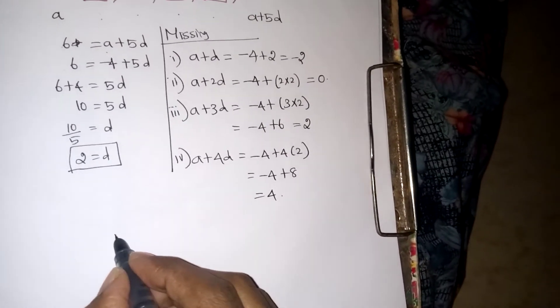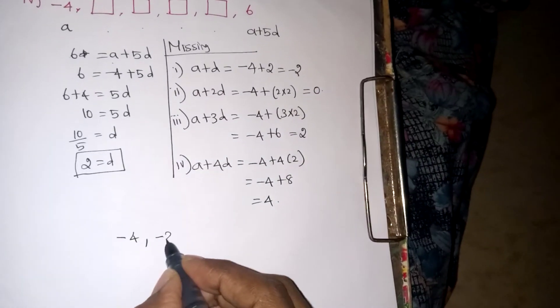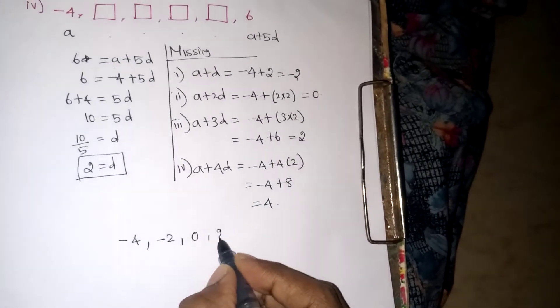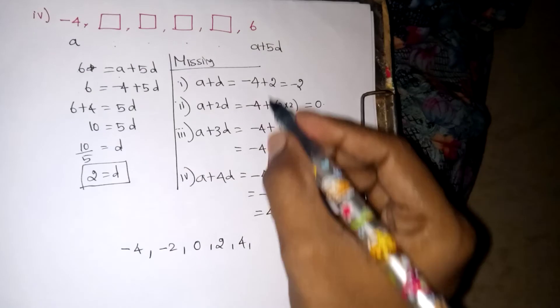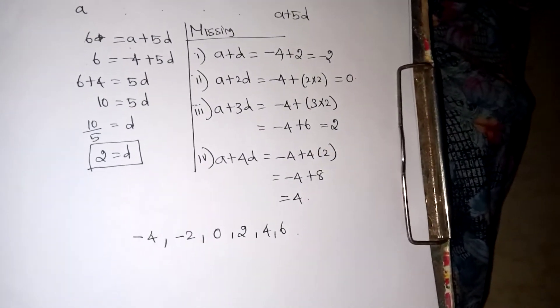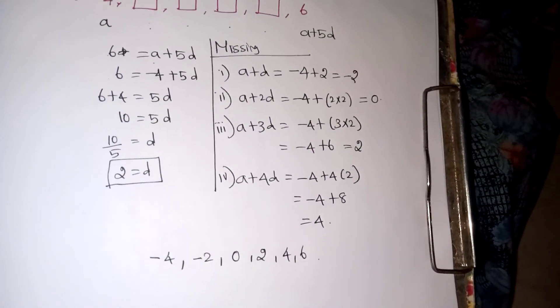So our question is minus 4 comma, the first missing term is minus 2, then 0, then 2, then 4, then what is given here is 6. So this is your correct answer. Just write it in this way and give your answer.